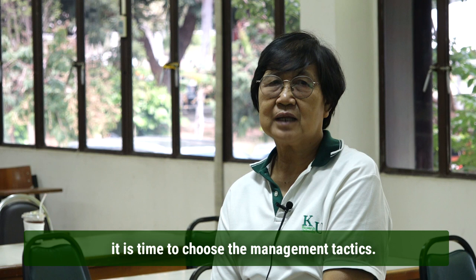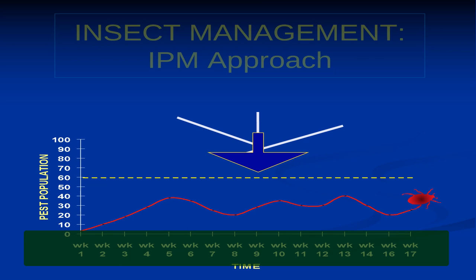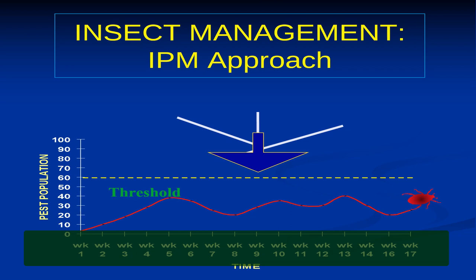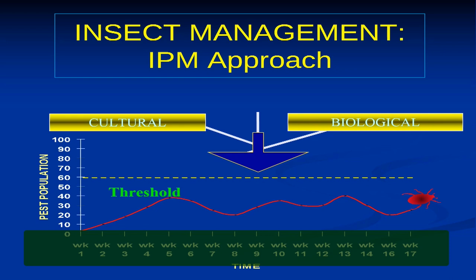In integrated pest management, when we track the pest population over time, the relationship between pest population and time gives us the insect threshold. When the insect threshold is at a normal level, cultural practice and biological practice can be used for controlling the population.